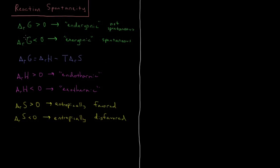We can make a table based off of the sign of these values and determine whether a reaction is spontaneous and at what types of temperatures it will be spontaneous. So let's make our table: sign of delta H of reaction, sign of delta S of reaction, and sign of delta G of reaction.